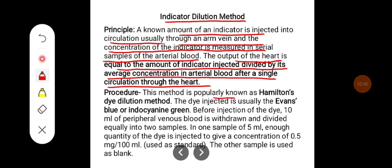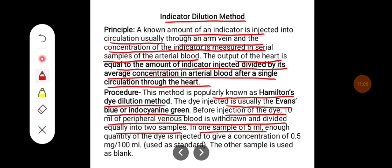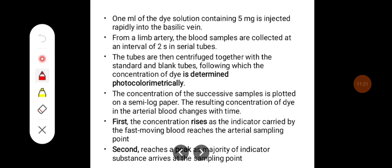This method is popularly known as Hamilton's dye dilution method. The dye injected is usually Evans blue or indocyanine green. Before injection of the dye, 10 ml of peripheral venous blood is withdrawn and divided equally into two samples. In one sample of 5 ml, enough quantity of dye is added to give a concentration of 0.5 mg per 100 ml. The other sample is used as a blank.